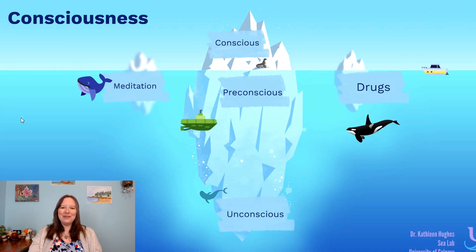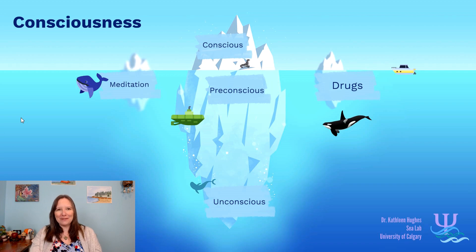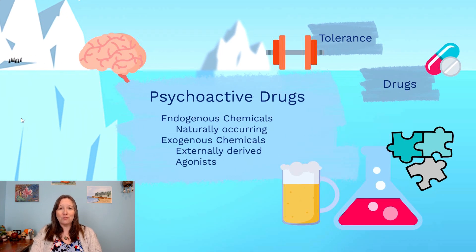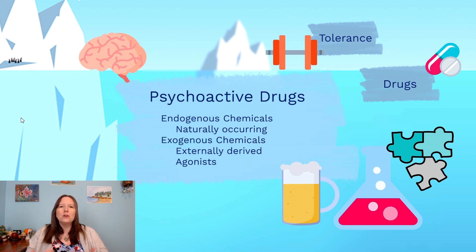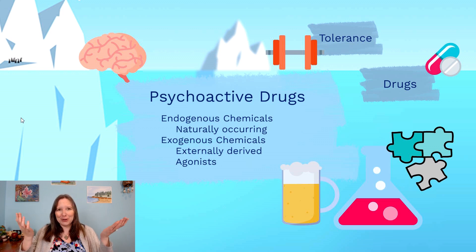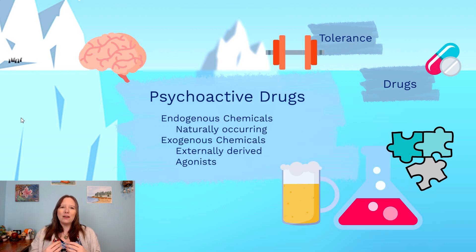The last section of this unit is a very detailed section where we're going to talk about psychoactive drugs and how they can play a role in our conscious reality. So what is a psychoactive drug? There are many different types of medications and substances out there. For this course, we're defining psychoactive drugs as drugs that mimic a neurotransmitter in a way that would change our consciousness.